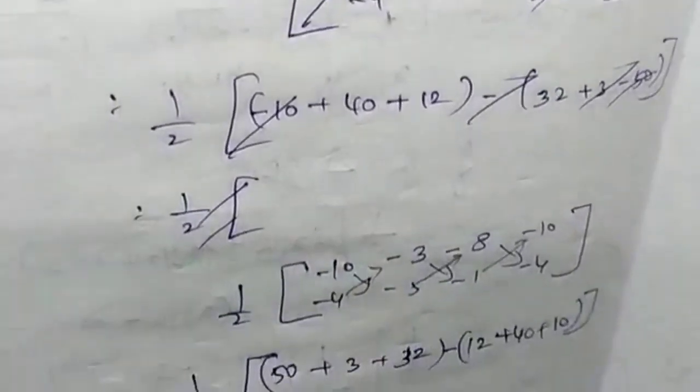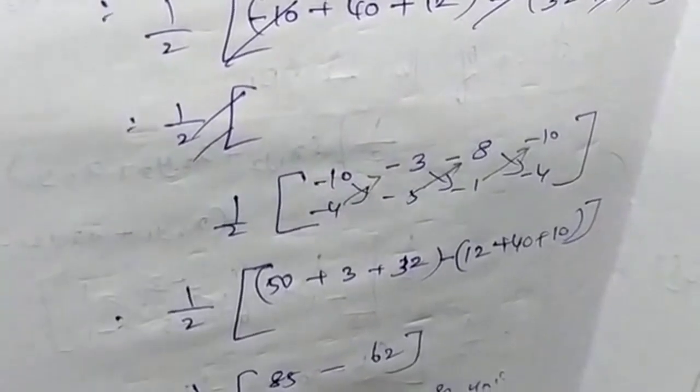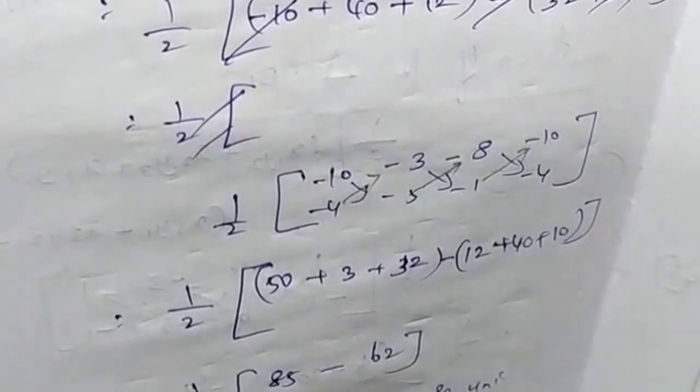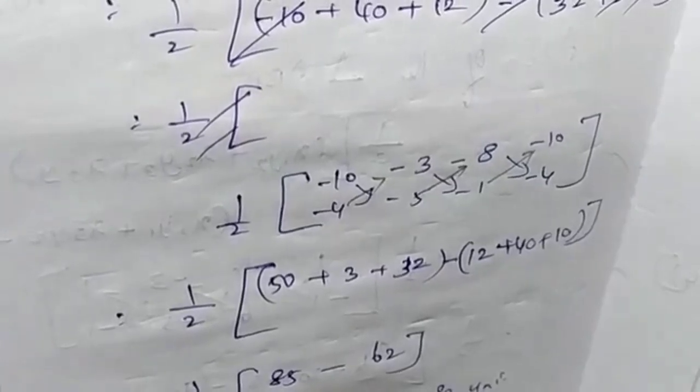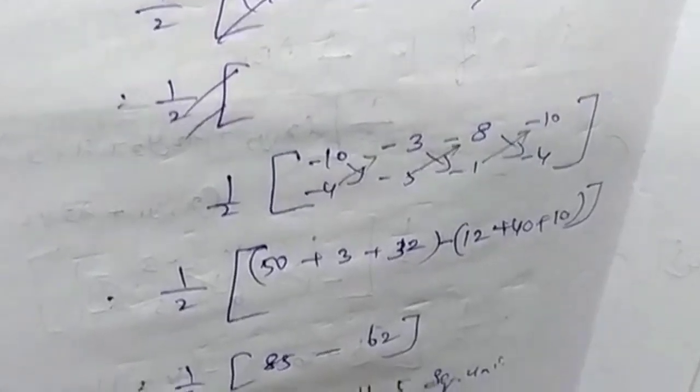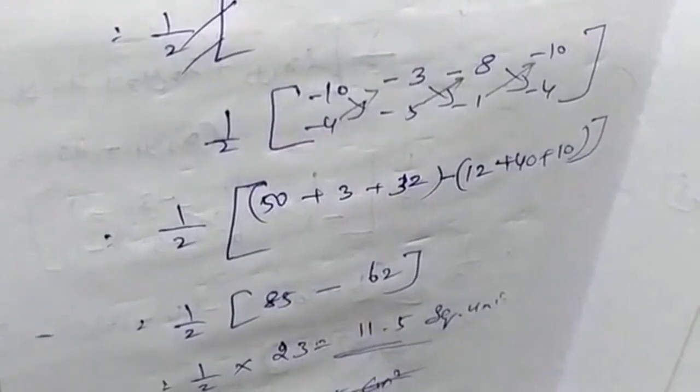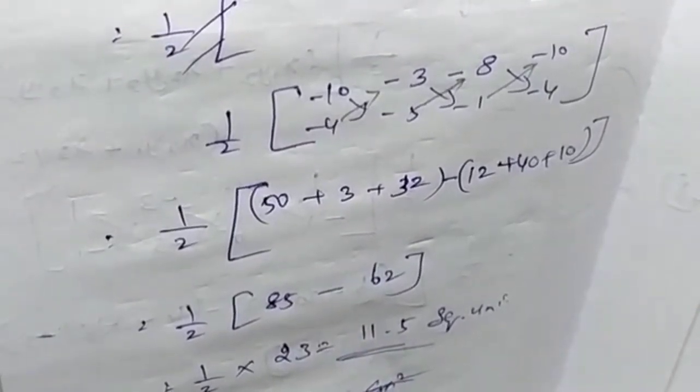You can apply this value: one by two times -10, -3, -8, -10. One by two: 50 plus 3 plus 32 minus 12 plus 40 plus 50.